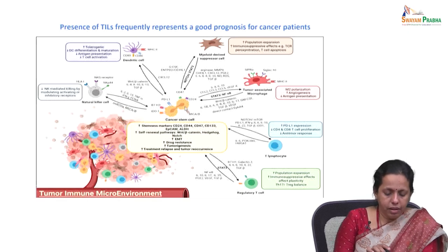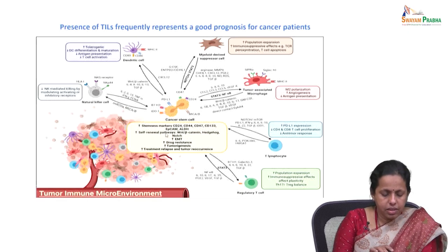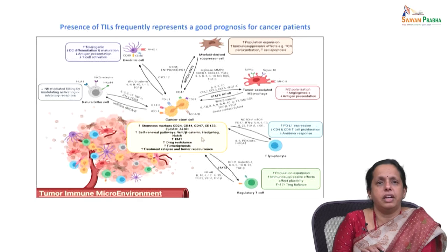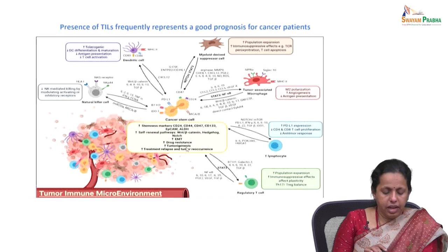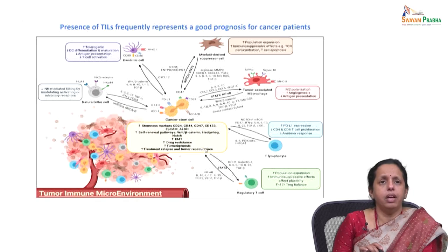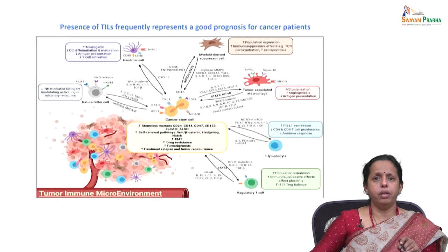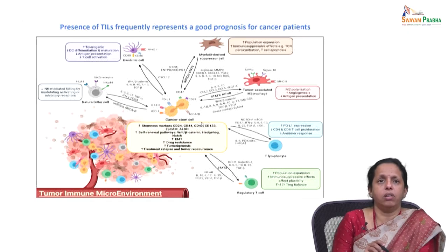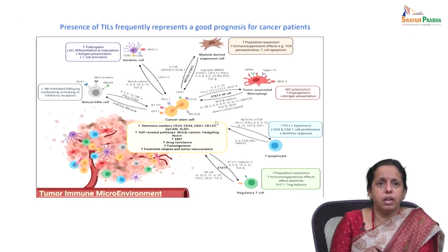Cancer cells, by producing CD18, recruit Tregs. Cancer stem cells have stemness markers such as CD24, CD44, and CD47. Self-renewal pathways including WNT/beta-catenin and Hedgehog are activated, increasing EMT, leading to increased drug resistance, tumor relapse, and tumor recurrence. Non-cytolytic CD8 T cells also contribute to cancer stem cell pathways.